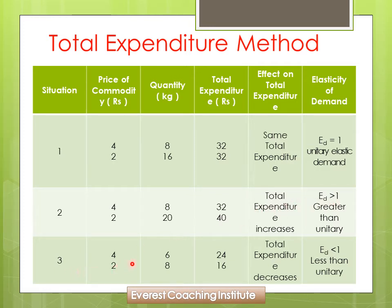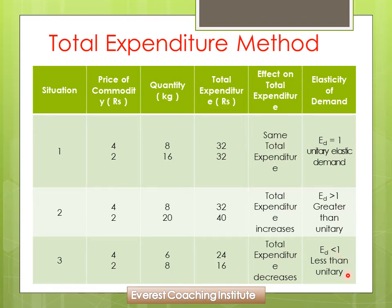Third case: jab price 4 tha, quantity 6 kg, total expenditure 4 × 6 = 24. Jab price 4 se 2 par aa gaya, quantity 6 se 8 kg ho gayi. Ab total expenditure: 2 × 8 = 16. Pehle 24 tha, ab 16 ho gaya — price kam hone se kharcha bhi kam ho gaya. Same direction mein ja rahe hain — it means ED is less than 1, less than unitary elastic. Yeh teen situations hain total expenditure method mein.